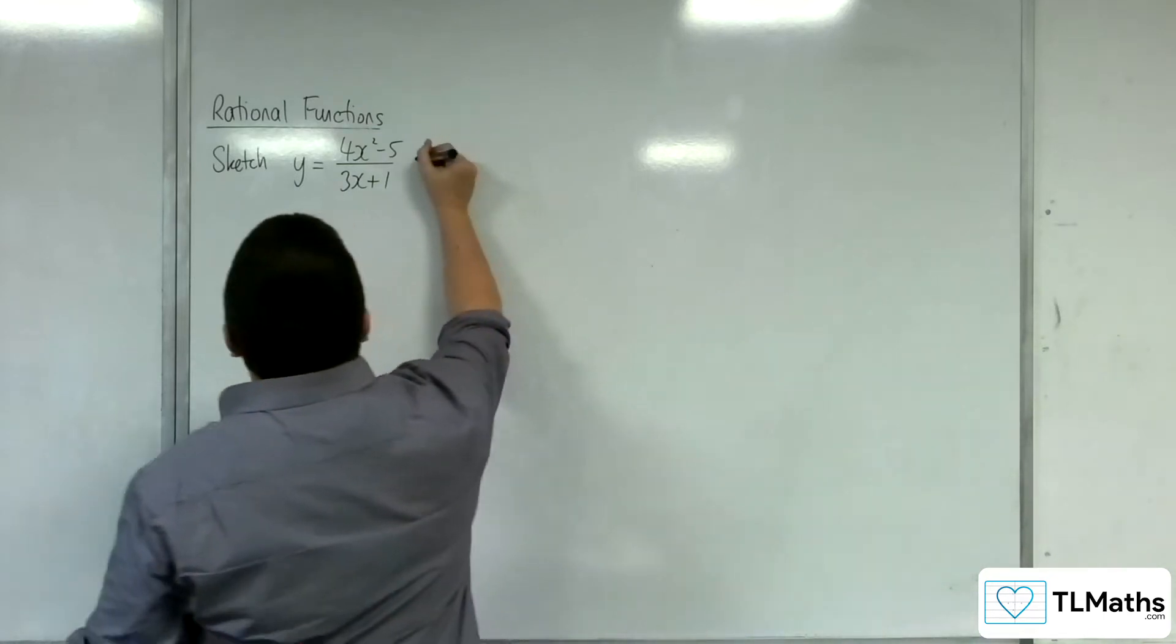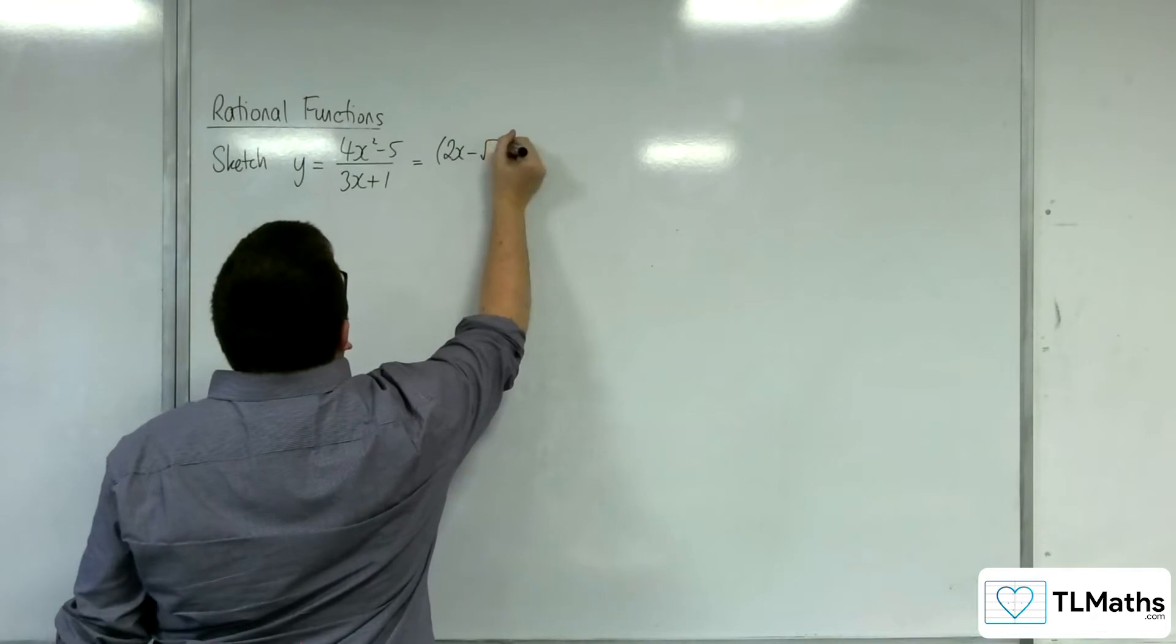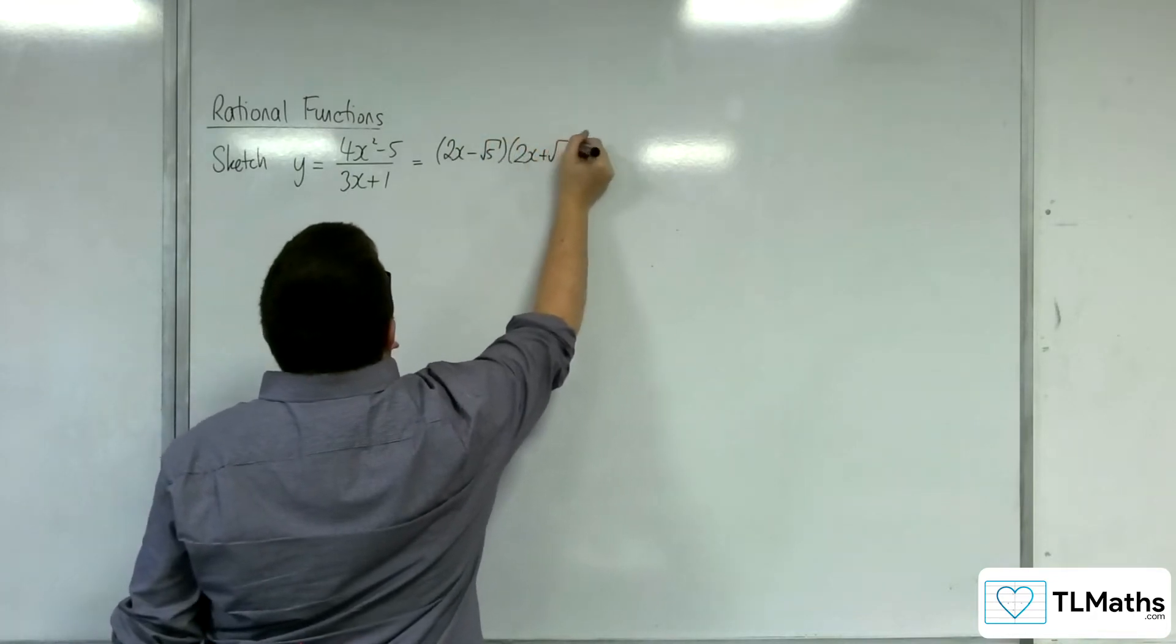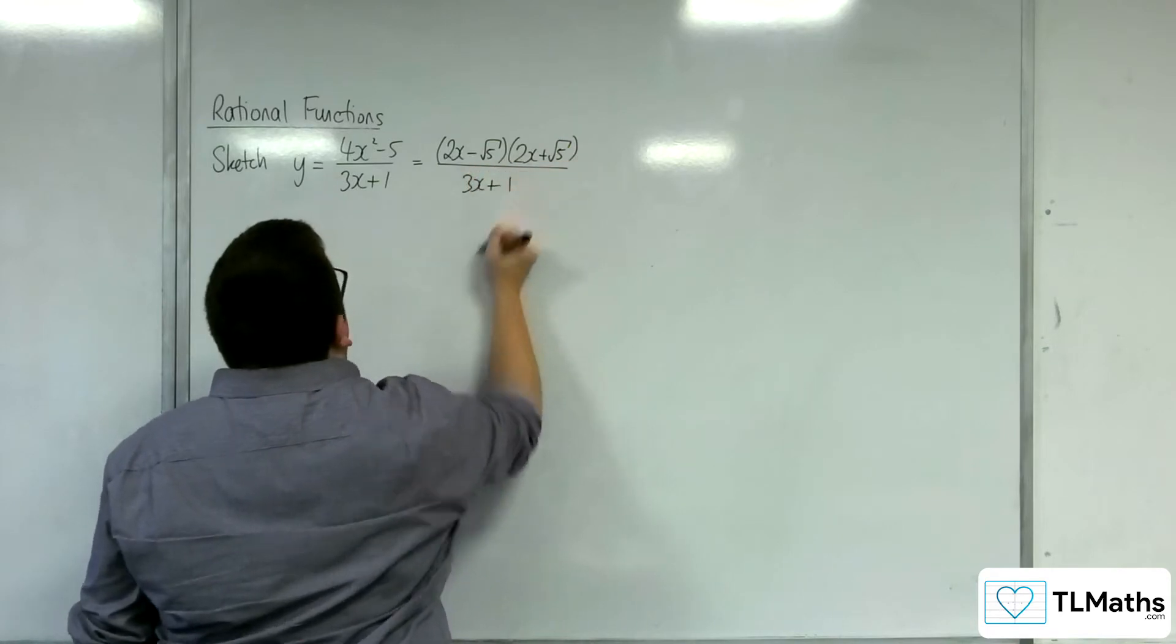I mean we could write it using the difference of two squares as 2x take away root 5, 2x plus root 5. And that might be useful to do that, don't have to.